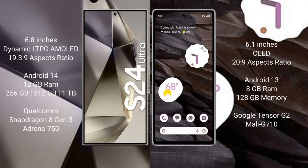The Samsung Galaxy S24 Ultra comes with a 6.8-inch Dynamic LTPO AMOLED display and an aspect ratio of 19.5:9. The Google Pixel 7a comes with a 6.1-inch OLED display and an aspect ratio of 20:9.